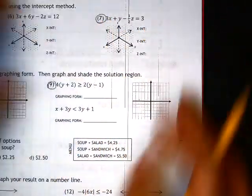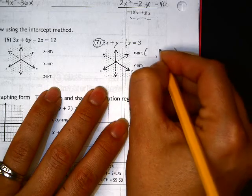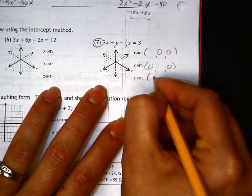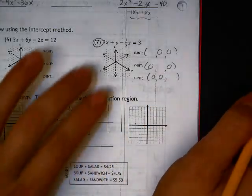All right, I've chosen to look at number 7. They're all very similar in nature in that for the x-intercept, I plug in zeros for everything else. For the y, I plug in zeros for everything else. And for the z-intercept, I plug in zeros for everything else.